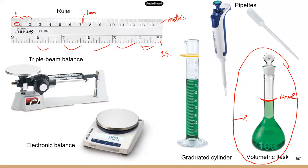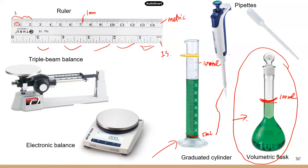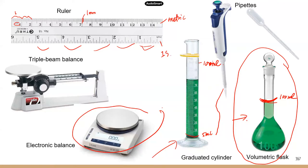The problem with a volumetric flask is that normally you can only measure one volume — whatever it's labeled for. So if you need to measure more variable volumes, you can use a graduated cylinder. You can measure any volume within its range — from about 5 mils all the way to 100 mils for this particular one — giving you flexibility in how much volume you can measure. For weight, this is the electronic balance, which we use a lot in the biology lab. And this is what a triple beam balance looks like — very old-fashioned; I've never seen one actually used in the lab.